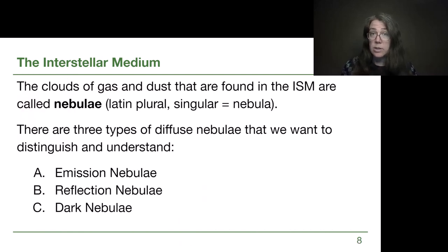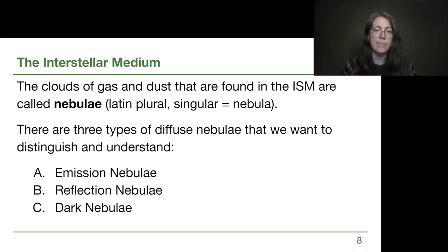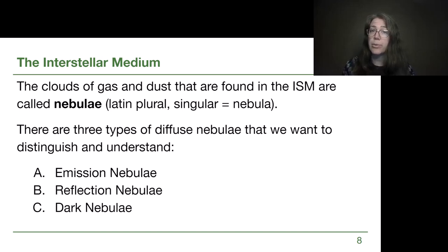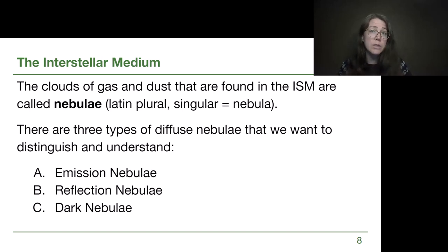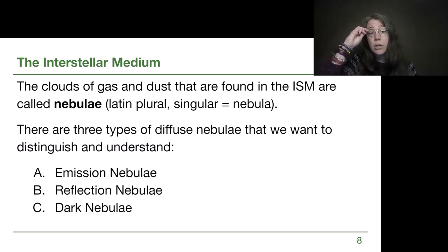The clouds of gas and dust found in the interstellar medium are called nebulae — that's a term we need. The singular form is nebula, and the plural is nebulae, which is a Latin plural. There are three types of diffuse nebulae we're going to be studying: emission nebulae, reflection nebulae, and dark nebulae. We want to make sure we distinguish why they look different and why they truly are different.